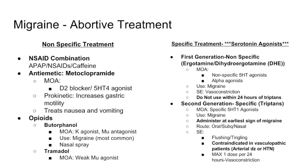Tramadol is another opioid — it's a weak opioid that works on the mu receptor. Know that opioids can also be used as abortive treatment and are considered a non-specific treatment.